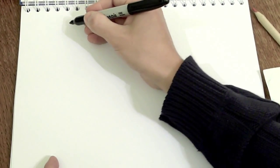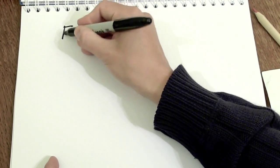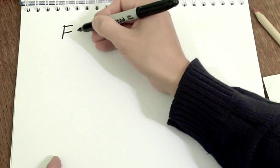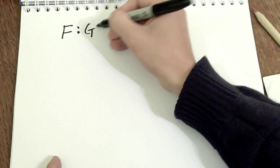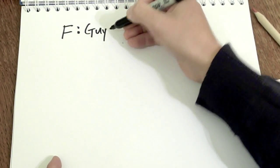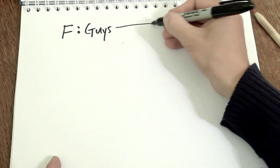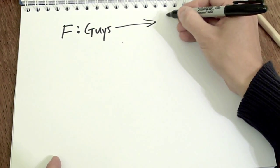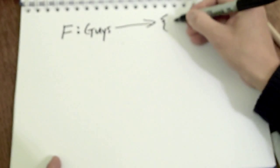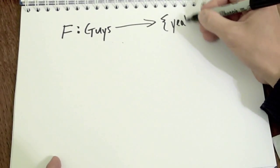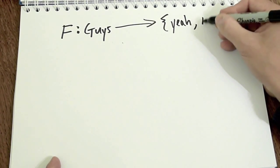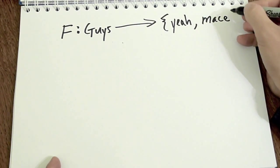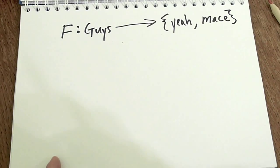So, we're going to construct a map. I'll tell you the domain and the range of the map. There's going to be two maps. One is going to be f, and it's going to take a guy, and it's going to give you a set of reactions. One of them will be called YAH. Y-E-A-H. Another reaction will be called MACE.